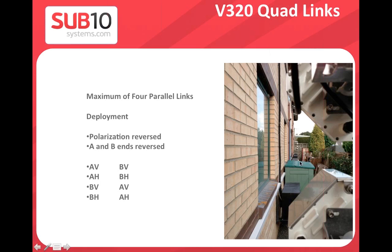People often ask how four parallel links on the same channel are possible. The answer is two frequencies (A and B) combined with two polarizations (vertical and horizontal), giving four combinations: A vertical, A horizontal, B vertical, B horizontal. With the new platform, configurable channel selection will allow even more variants, greatly increasing the number of co-located links possible.